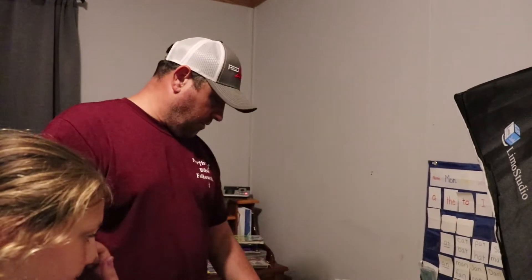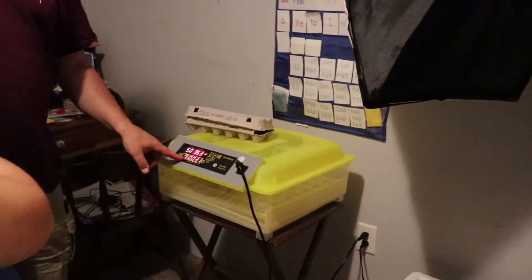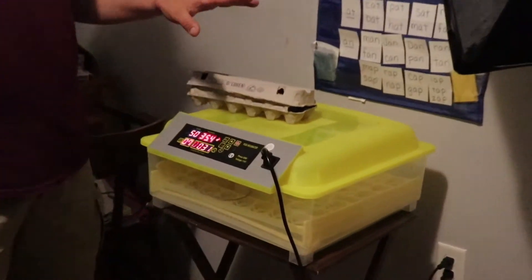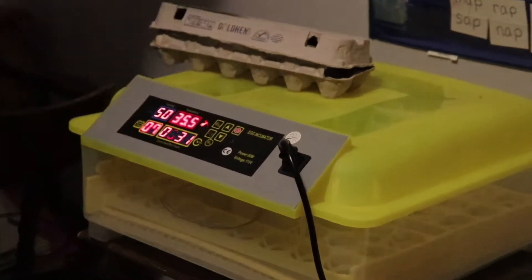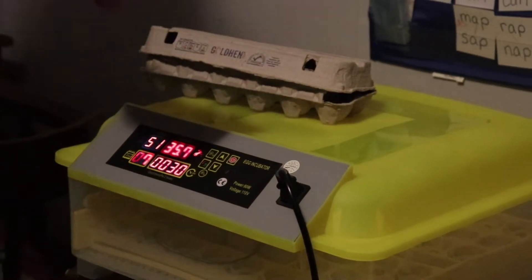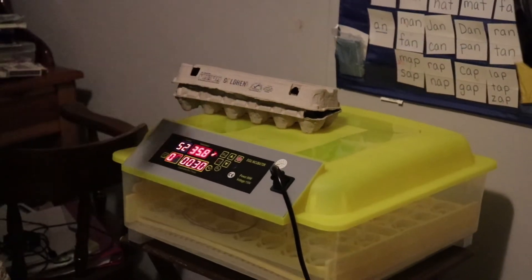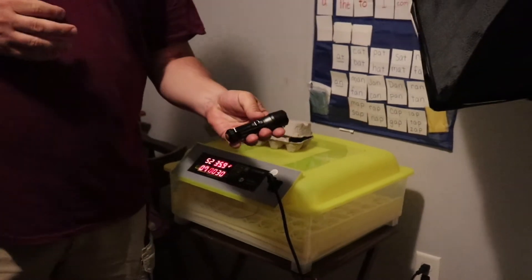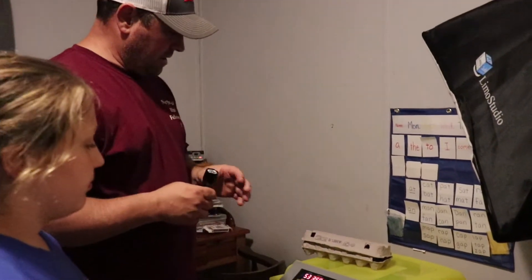All right guys, if you can see right here we're on day seven. We put 24 eggs in here and I want to show you how you know which ones were fertilized. It's called candling an egg. In the olden days you used to use a candle, but now you can just use a flashlight and we already...